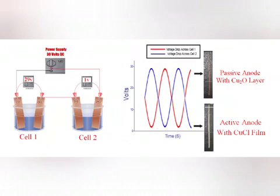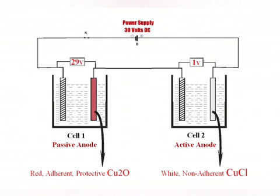If two or more electrolytic cells, having copper anodes and chloride electrolyte, are connected in series, then on application of external voltage, an extremely asymmetric voltage drop is observed across these cells in series. Each of these cells attains high and low voltage state in alternate manner.